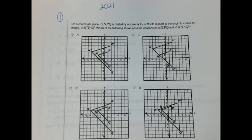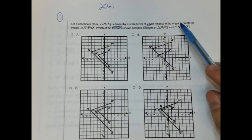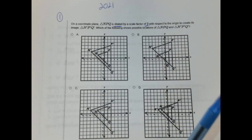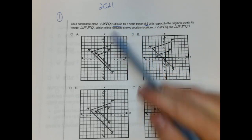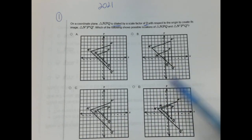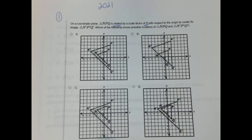So number one, on a coordinate plane, a triangle NPQ is dilated by a scale factor of 2 with respect to the origin to create its image, N prime, P prime, and Q prime, which of the following shows possible locations of NPQ and N prime, P prime, and Q prime. So if we look at all these, first of all, we know we're dilating here, and the pre-image is going to be NPQ, and the image is going to be N prime, P prime, and Q prime.